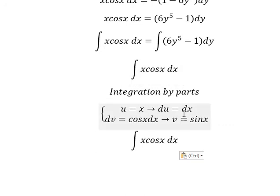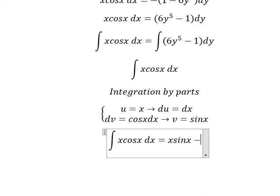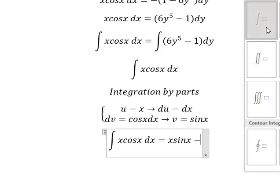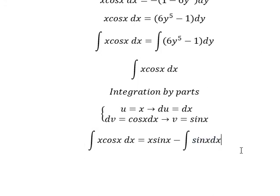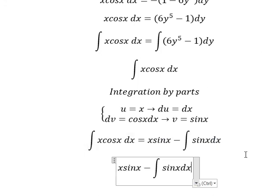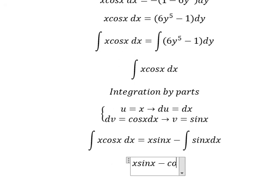So we have u multiplied by v minus the integration of du multiplied by v. The integration of this one, we have cosine x, and because this is about sine, we need to change into negative. Because negative with negative you got positive, and we put C.